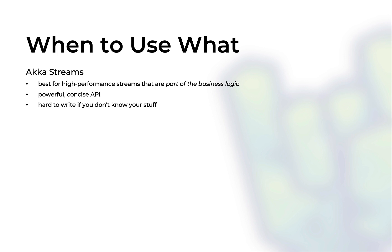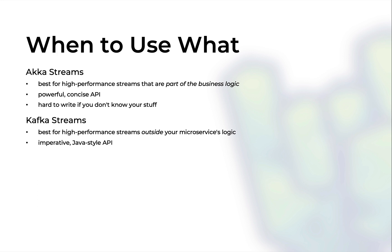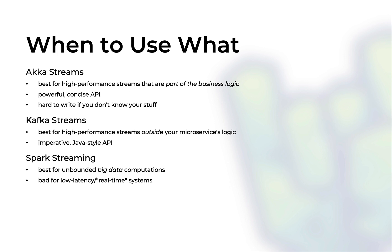So, when should you use what? Every framework was built with a certain intent. Akka Streams is best for high-performance systems when you want to bake it into your application. It has a very powerful API, but unless you know what you're doing it might be easy to shoot yourself in the foot. Kafka, on the other hand, works best as an external high-performance message bus for your application. If you want microservices to read and write to and from a common event store, you might be best with Kafka — though its Java-style API is cumbersome, which may be a matter of taste. Finally, Spark Streaming is without a doubt best for big data computation.